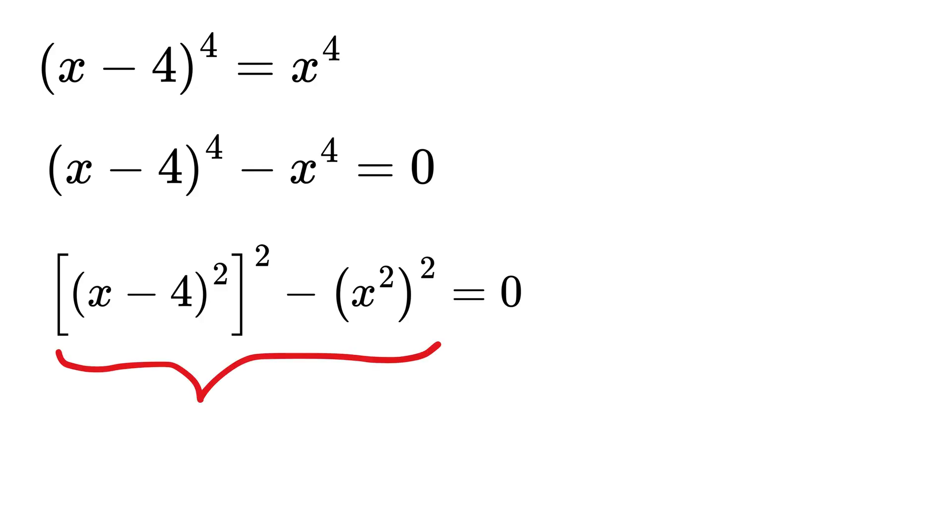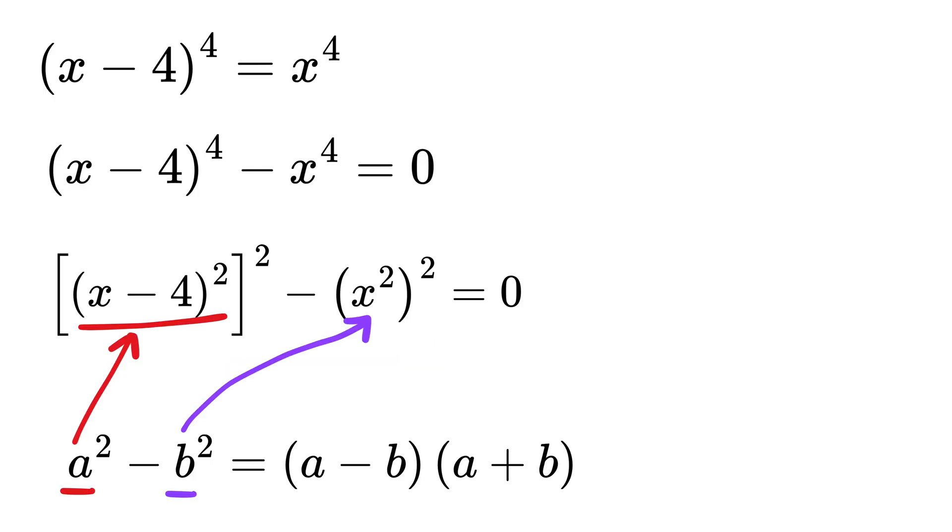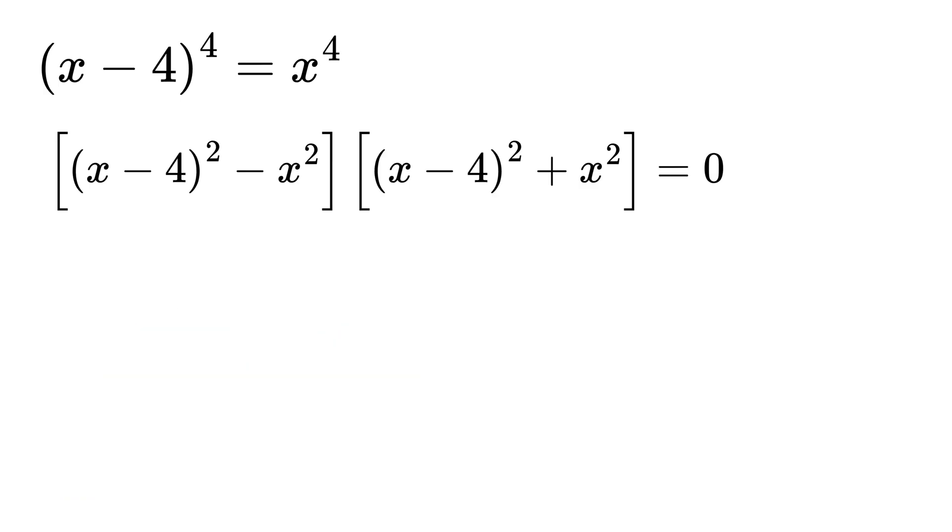Now this entire thing is of the form a square minus b square, which is equal to a minus b times a plus b. Here a is x minus 4 square and b is x square. So this thing becomes a minus b which will be bracket x minus 4 square minus x square and a plus b will be x minus 4 square plus x square and this is equal to 0.